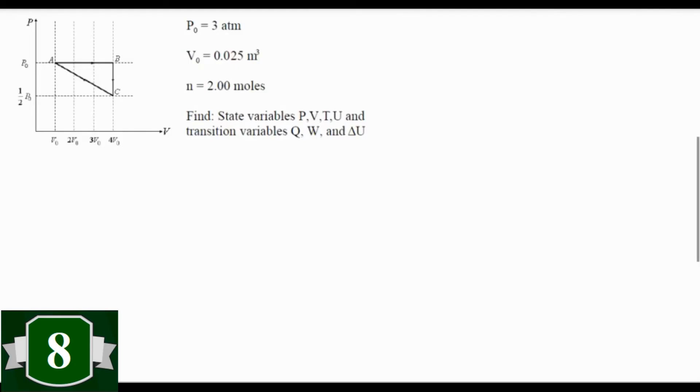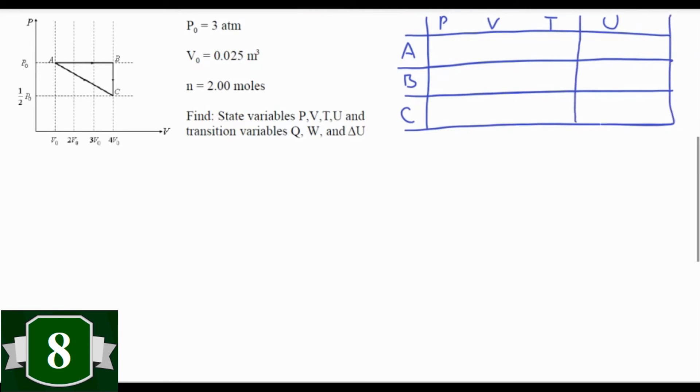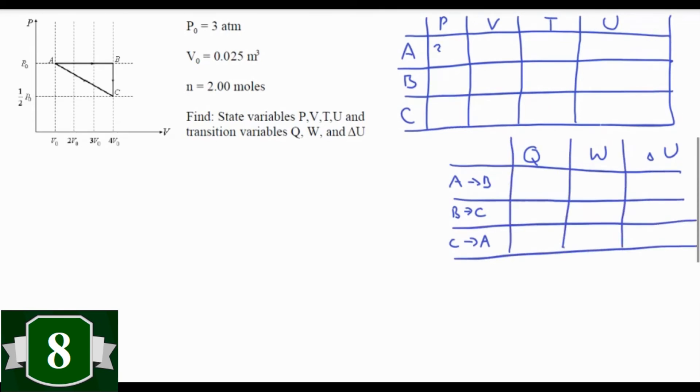For this problem, we have a gas engine which is going through a cycle from A to B to C back to A. At A, we have a pressure P naught of three atmospheres, a volume V naught of 0.025 cubic meters, that would be 25 liters, and we know there are two moles. Our job is to find the state variables P, V, T, and U, that's pressure, volume, temperature, and internal energy, at A, B, and C, as well as to find the transition variables Q, W, and delta U as they pass between states A to B, B to C, and C to A. And yeah, for this kind of problem, charts come in really handy.